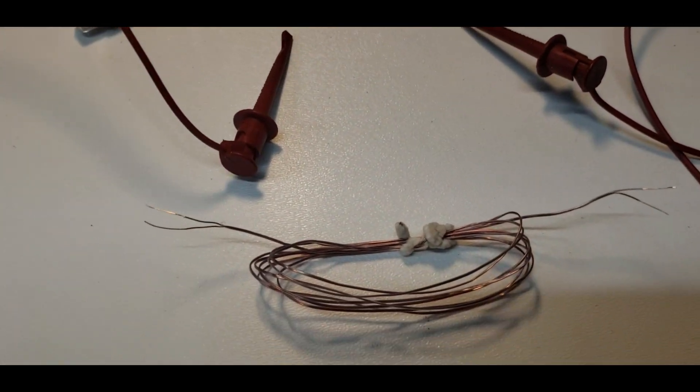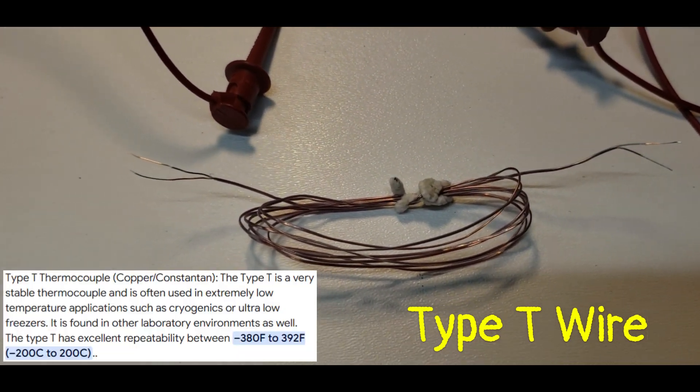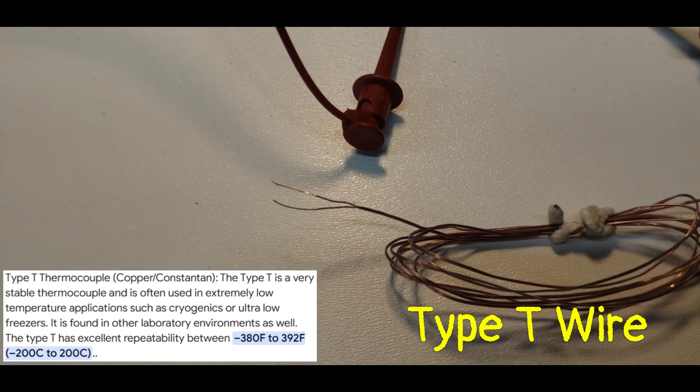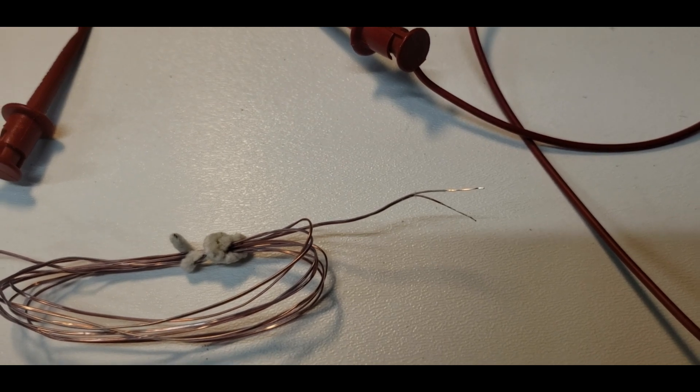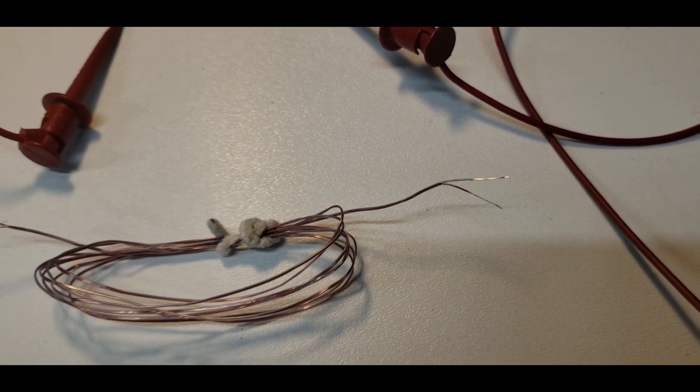So what you need is some thermocouple wire, and you have to strip it at both ends. One end will be hooked to the meter and the other end will be the actual thermocouple I'm going to make here in a second, and I'll show you how.